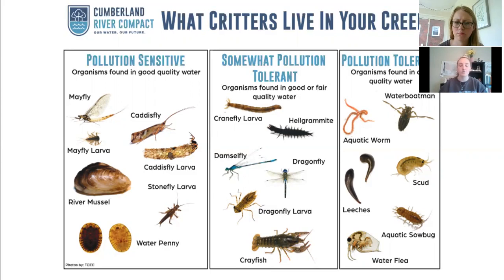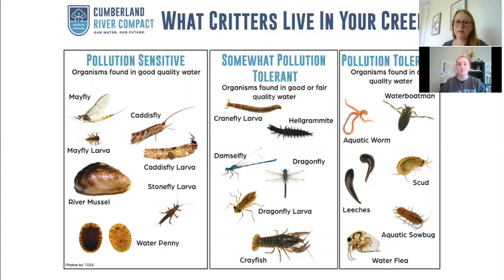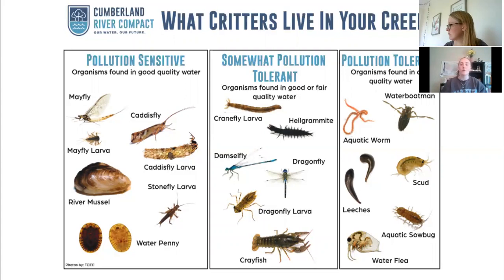A few things to note looking at this graphic. A lot of people ask about the 'bad bugs' — leeches, scuds, water boatmen — but there really are no bad bugs. These organisms simply have the capability of living in polluted water, and that's not their fault; they just do what they're meant to do. The next important point is that we want to have organisms from each of these groups. Having representatives from each group means our stream community is strong — just like in our human communities, we want different types of people with different abilities, and that makes us strong. Our streams are no different.